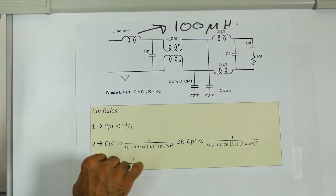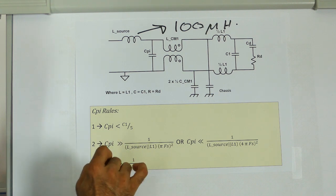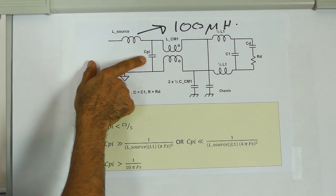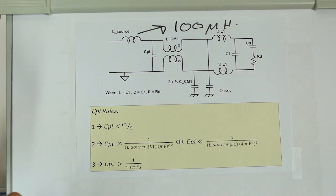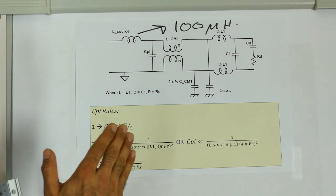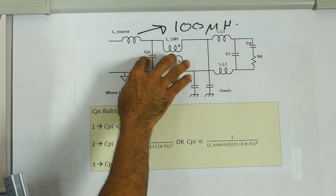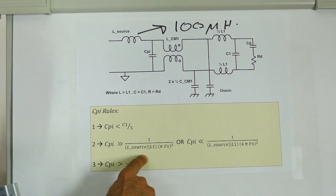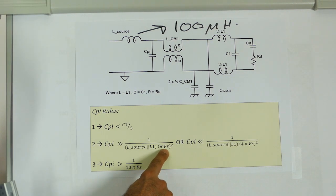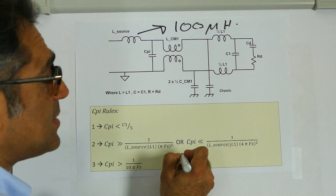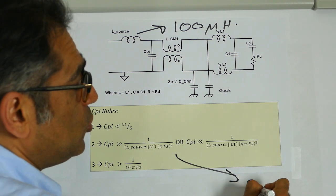Secondly, the resonant frequency of the filter that is formed when you add Cpi is dependent on the switching frequency. And you're trying to be away from the resonance of this circuit with regard to the switching frequency. And you can see this from rule two, whereby you take into account your switching frequency and you take into account the source inductance. In our case, for example, switching frequency FS is going to be 200 kilohertz.